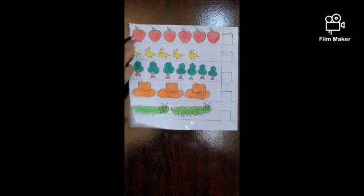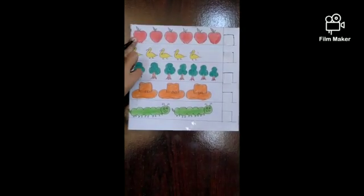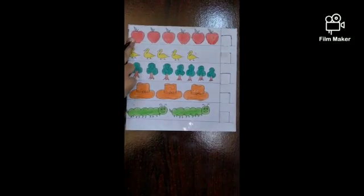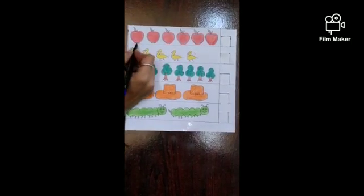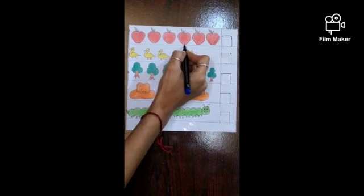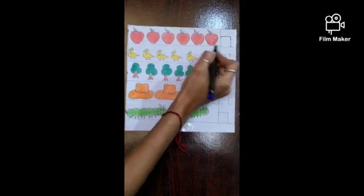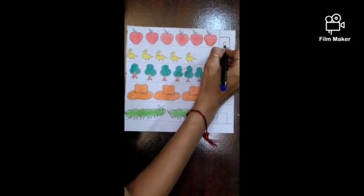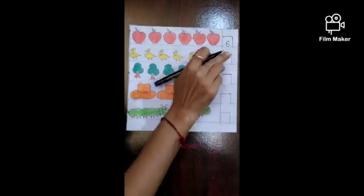Which picture is this? An apple. What is the color of an apple? Red color. How many apples are there? Count it. 1, 2, 3, 4, 5, 6 apples. How many apples? 6 apples. Okay kids?